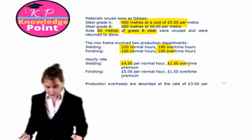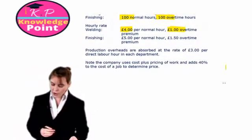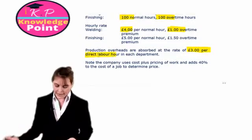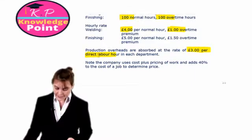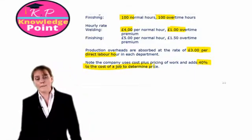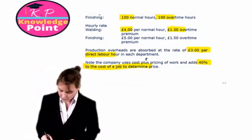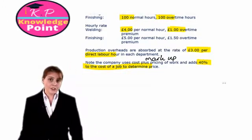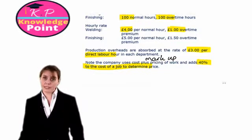Finally, we are given information about the production overheads — we charge overheads at a rate of £3 per direct labour hour. The company uses cost-plus pricing and adds 40% to the cost of the job to determine the price, so this is just a markup. What we need to do is prepare the job card for job number 606.